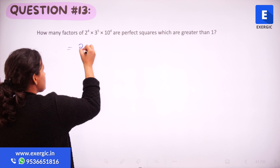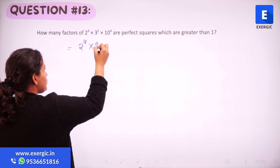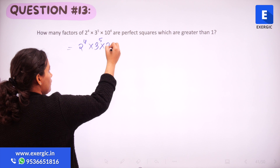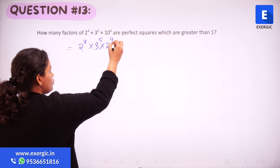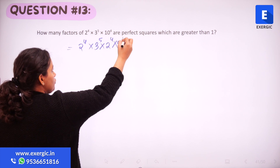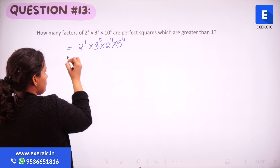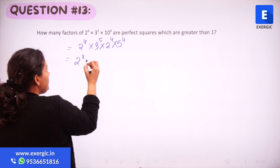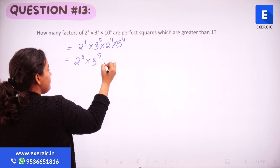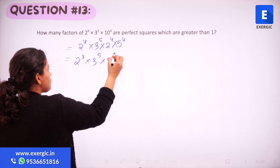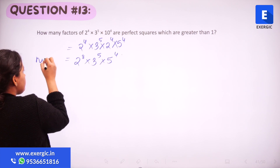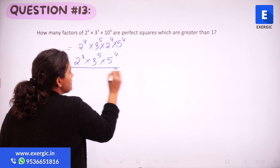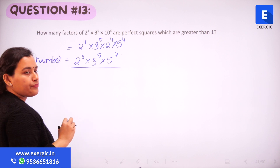This can be expressed as 2 raised to the power 4 into 3 raised to the power 5. Then 10 raised to the power 4 will be 2 raised to the power 4 into 5 raised to the power 4. So we get 2 raised to the power 8 into 3 raised to the power 5 into 5 raised to the power 4. This is the final number that has been given to us.